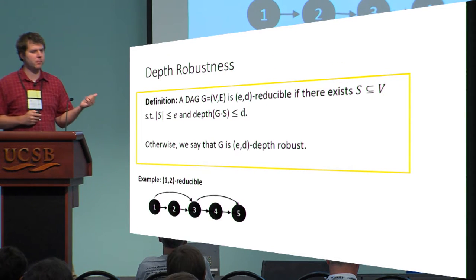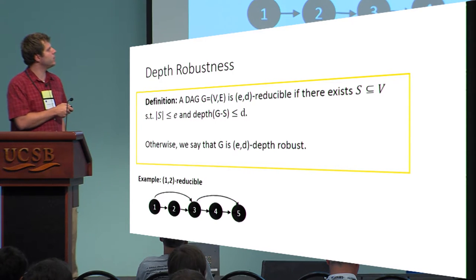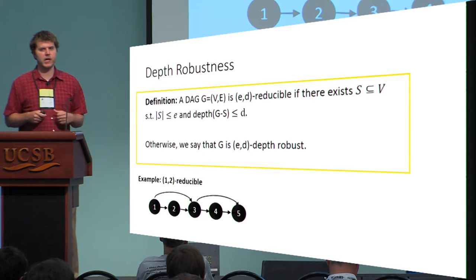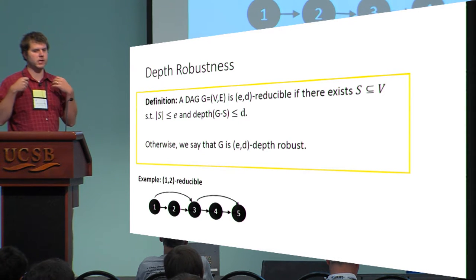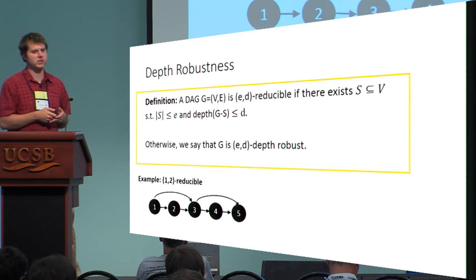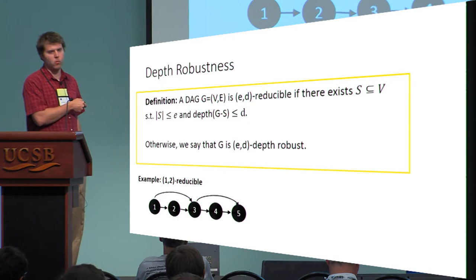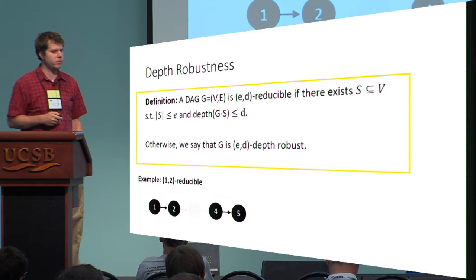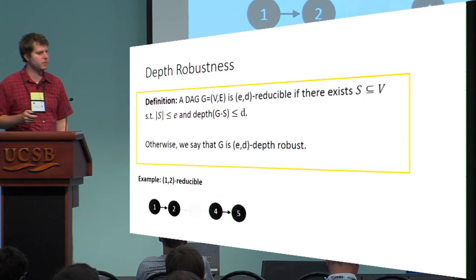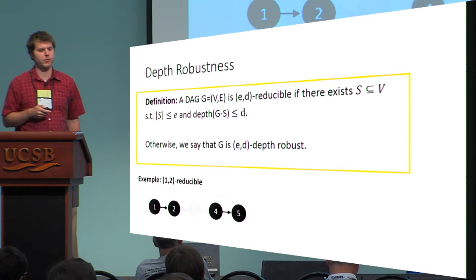What does it mean to be depth robust? We say that a graph G is (e,d)-reducible if there exists a small subset S of at most e nodes such that by removing the nodes in S from graph G, the length of any path in the remaining graph is at most d. For example, this graph here is (1,2)-reducible — if we delete nodes 2 and 3, any path has length at most 2. Of course, if a graph is not (e,d)-reducible then we call it (e,d)-depth robust.